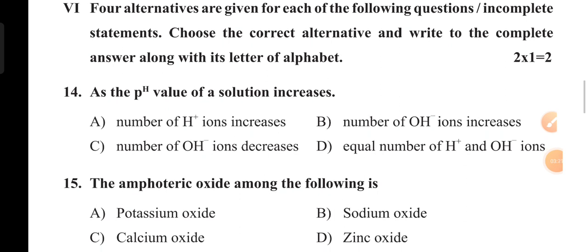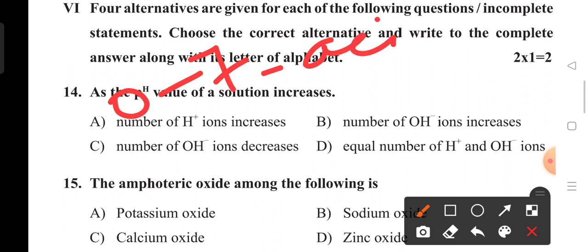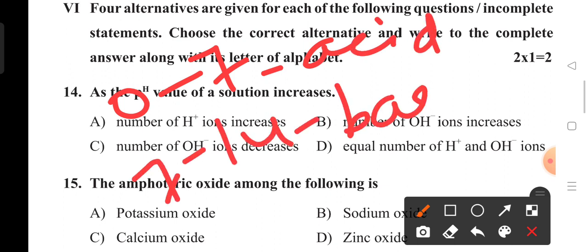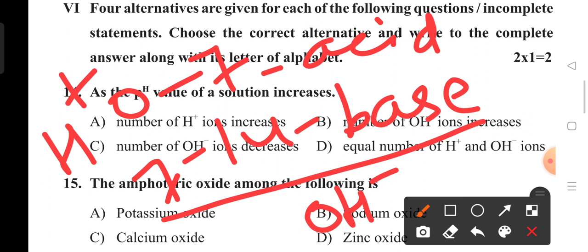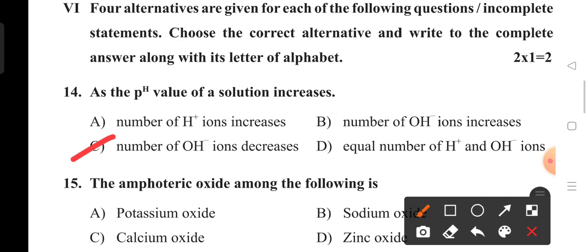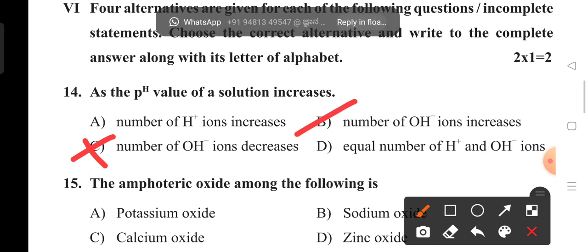Now the chemistry part. The pH value of the solution increases. We already studied that 0 to 7 is acid and 7 to 14 is base. When the pH of a solution is increasing it means it's turning towards base. Whenever the solution turns into base, hydroxide ion concentration is increasing. That's why option B is the right answer — number of hydroxide ions increases.